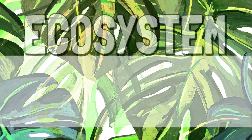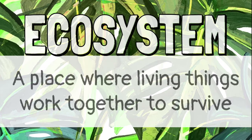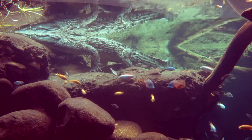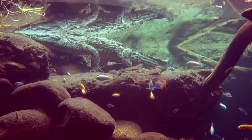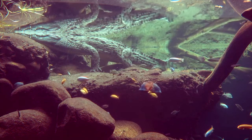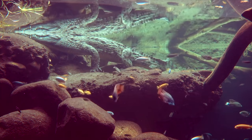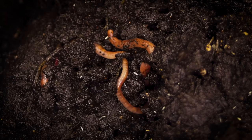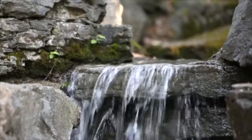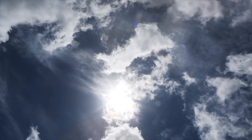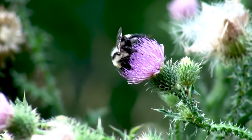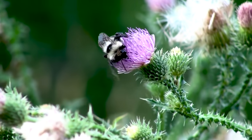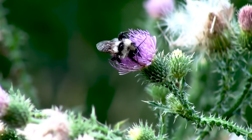An ecosystem is a place where living things work together to survive. The survival of all organisms depends on other living things and environmental factors like soil, water, air, and sunlight. Each specific area where this balance exists is called an ecosystem.